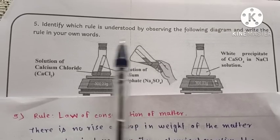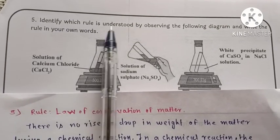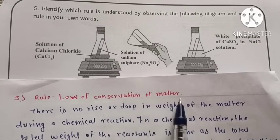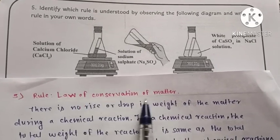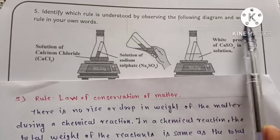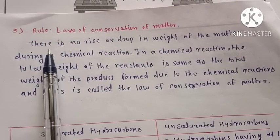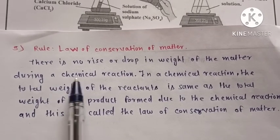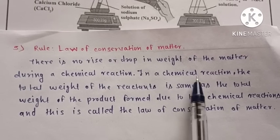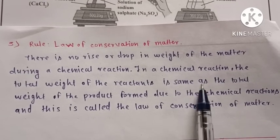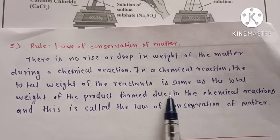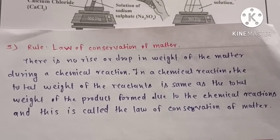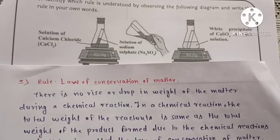Answer: first, identify which rule is understood by observing the following diagram. Rule is law of conservation of matter. Write the rule in your words: there is no rise or drop in weight of matter during a chemical reaction. In a chemical reaction, the total weight of reactants is the same as the total weight of the products formed, and this is called the law of conservation of matter.